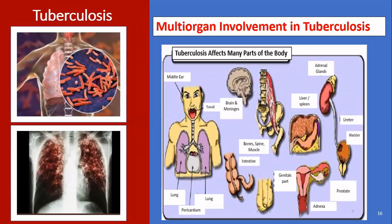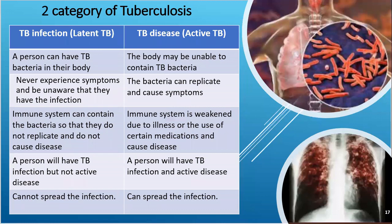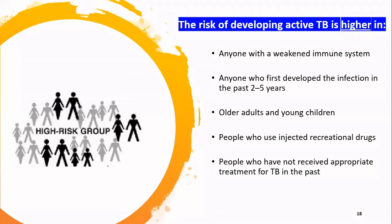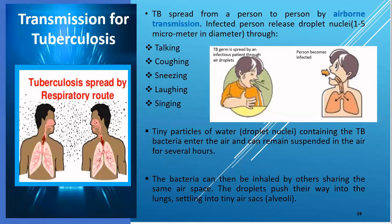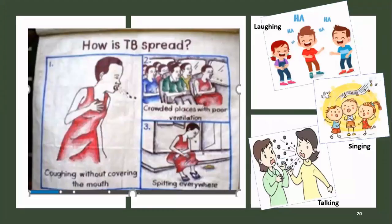Tuberculosis has affected many parts of the body. There are two categories of TB: latent TB and active TB. The risk of developing active TB is higher in anyone with a weakened immune system, anyone who first developed the infection in the past two to five years, or older adults and young children. TB is spread by airborne transmission — infected persons release tubercle nuclei when they are talking, coughing, sneezing, laughing, or singing.